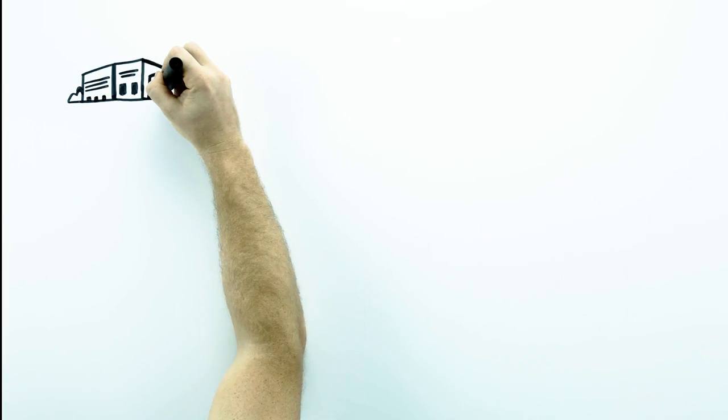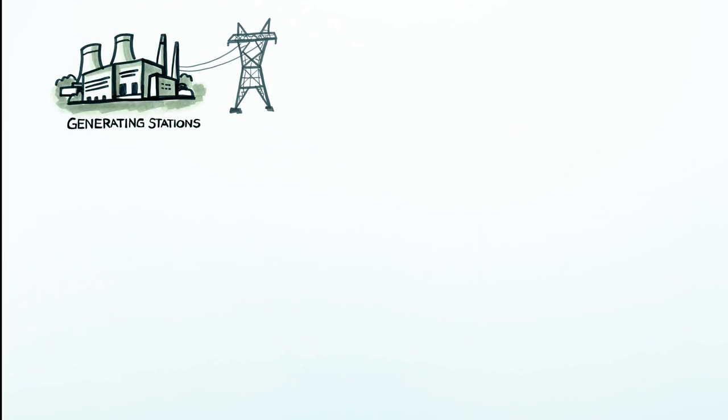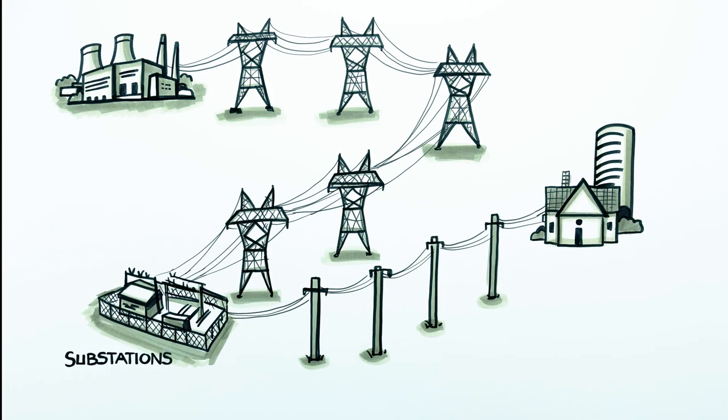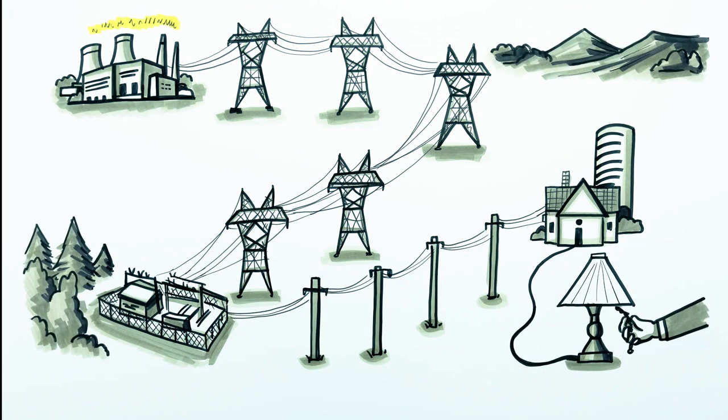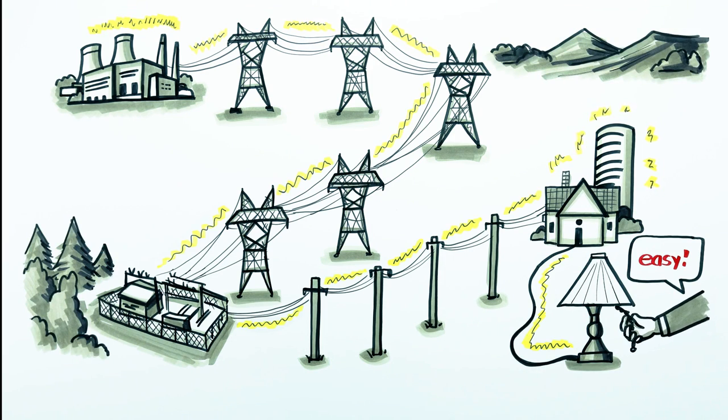Finally, the energy created at the generating station many miles from your home has traveled across the large electric grid into your home and to your electric devices. So, while the switch is easy to flip, powering your light bulb is anything but simple. In fact, it's pretty amazing.